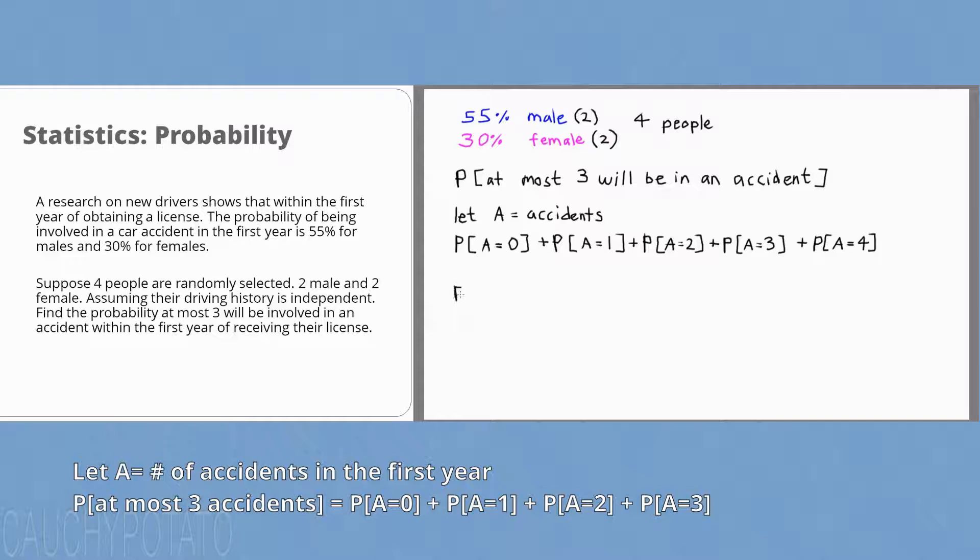Since the probability we want is at most three accidents, the probability we are looking for is either zero, one, two or three accidents. And as I mentioned, since they're mutually exclusive probabilities, we add. So the probability one accident happens, plus the probability two accidents happen, plus the probability three accidents happen. These are going to be a lot of probabilities to add.